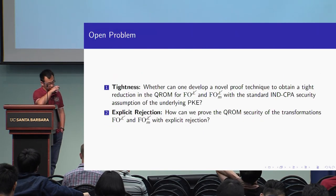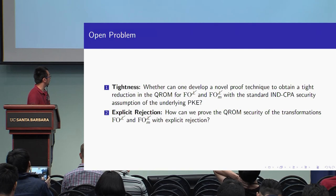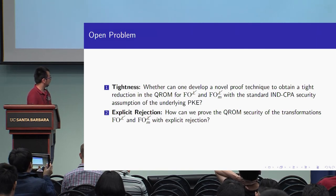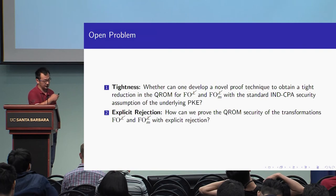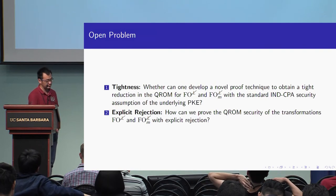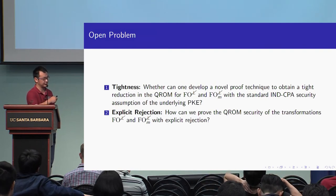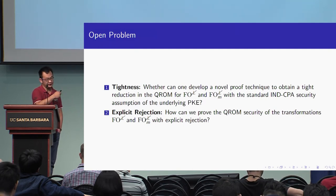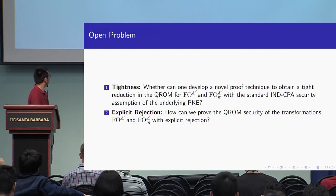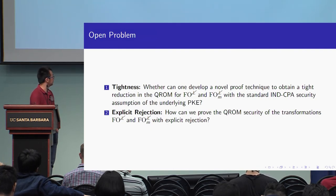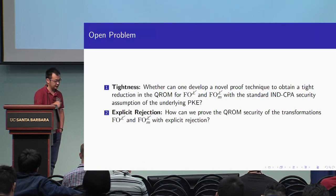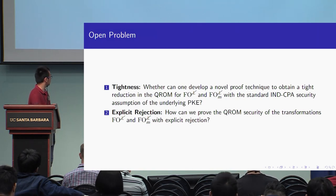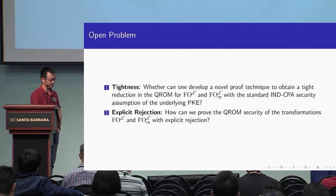Here are two open problems. The first is whether we can achieve tight security — our transformation has a security loss of square of epsilon, but we do not know whether a transformation without security loss exists. The second is whether we can prove explicit rejection for our full transformations; in our current work we only proved implicit rejection, not the explicit one.